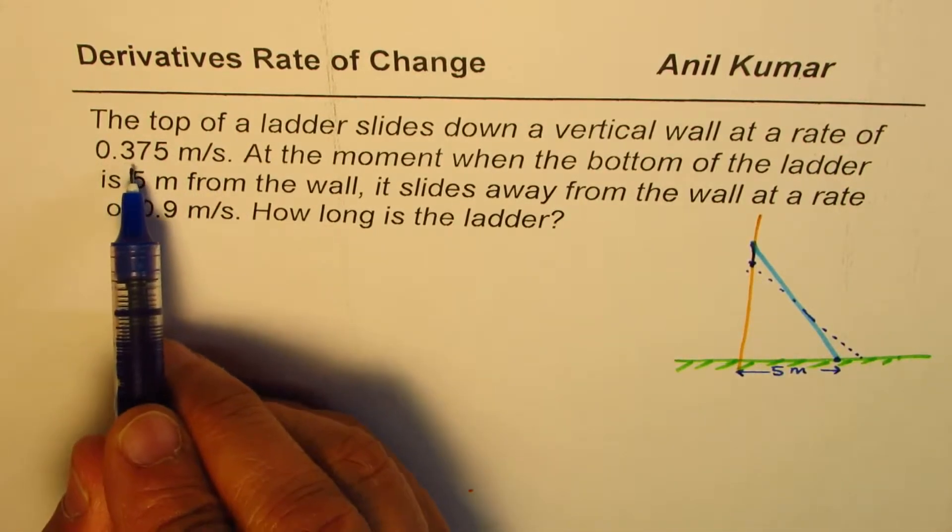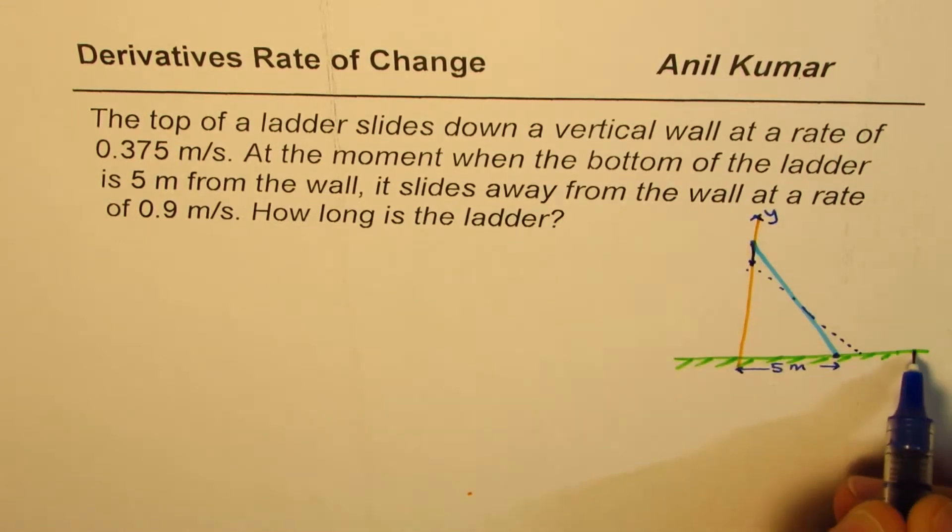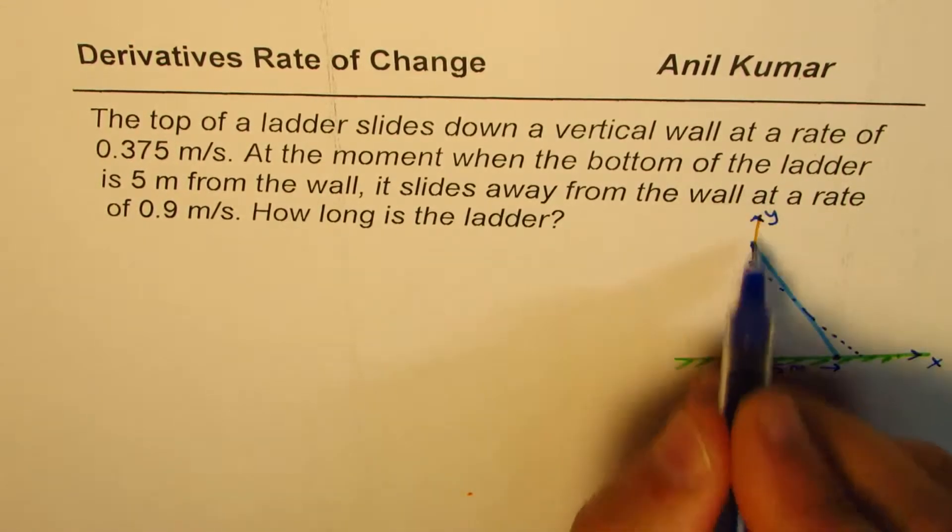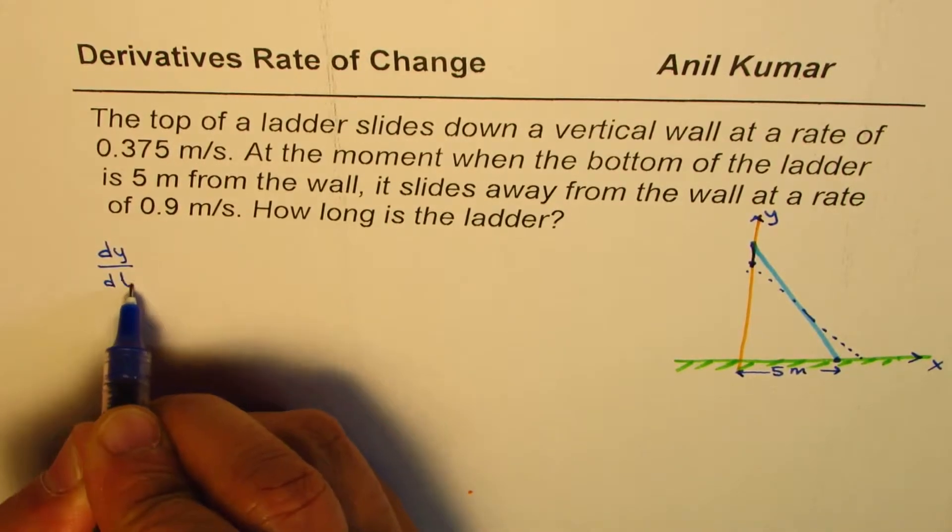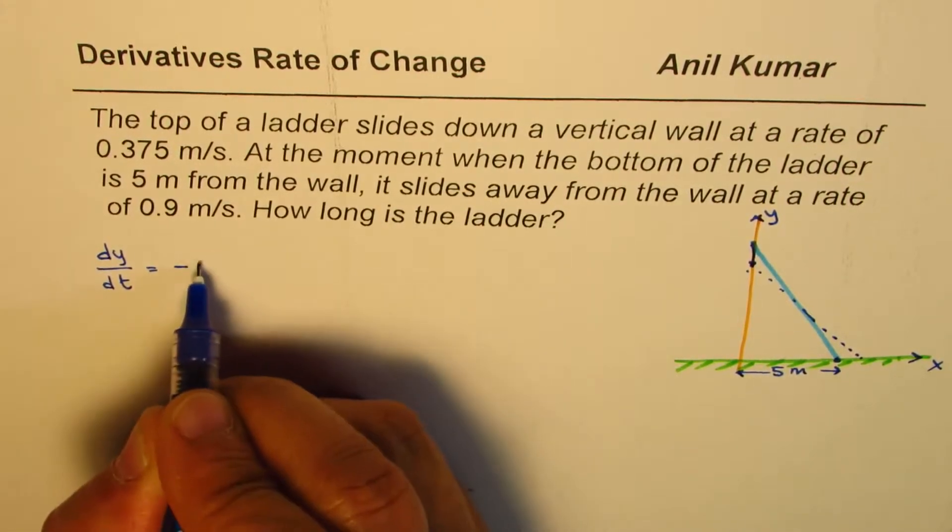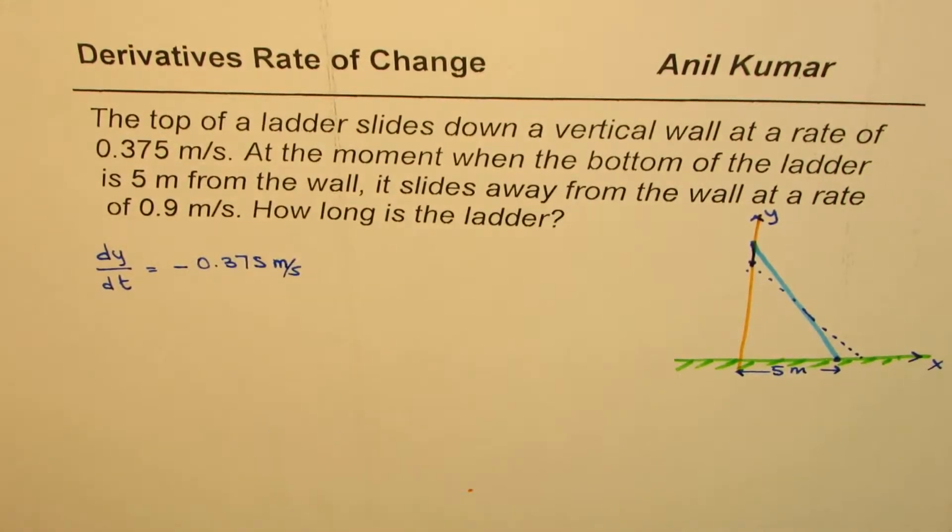When it is coming down, we'll indicate this rate of change as a negative number. Let's call this as y-axis, this as x-axis. So I'll write dy/dt with time as -0.375 meters per second. Now this is very critical, so when we say coming down we have to indicate this with a negative sign.